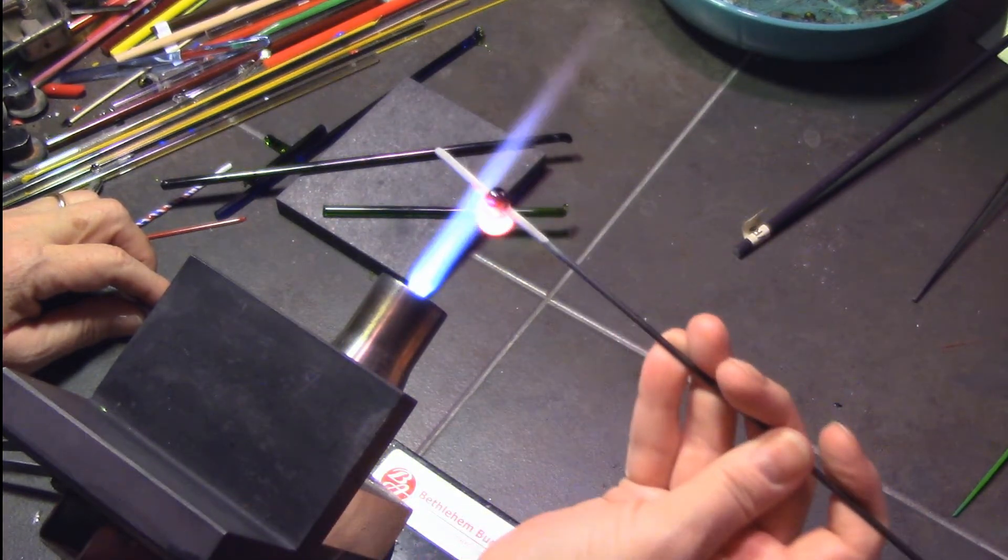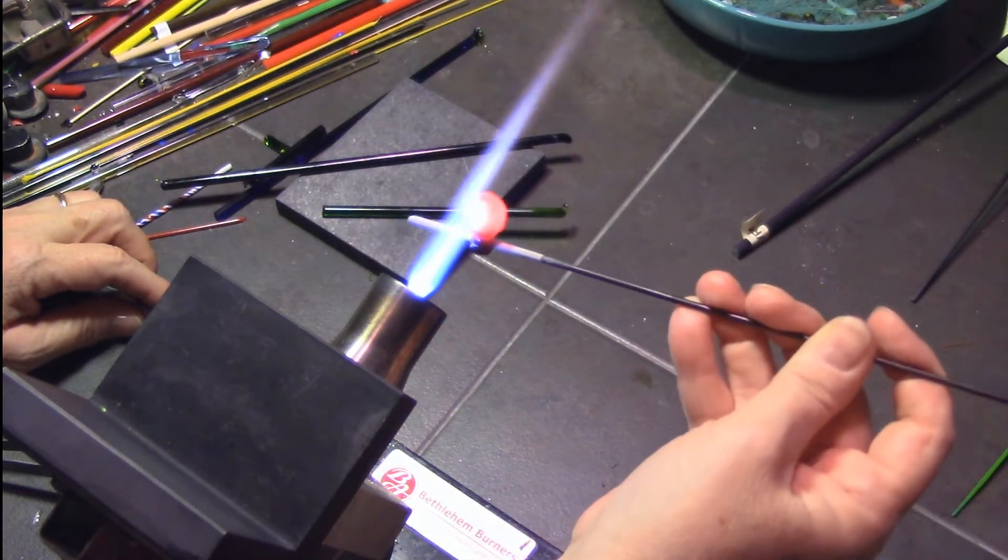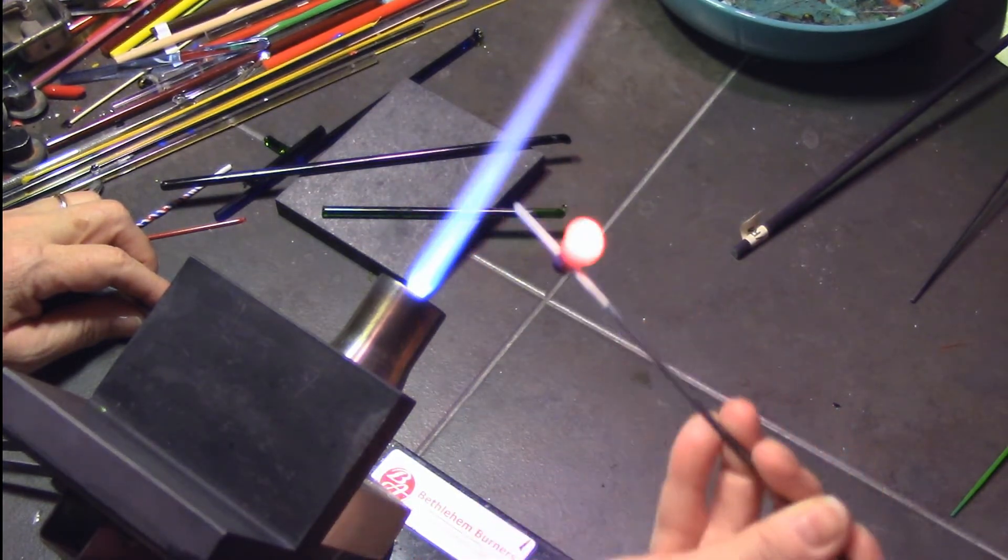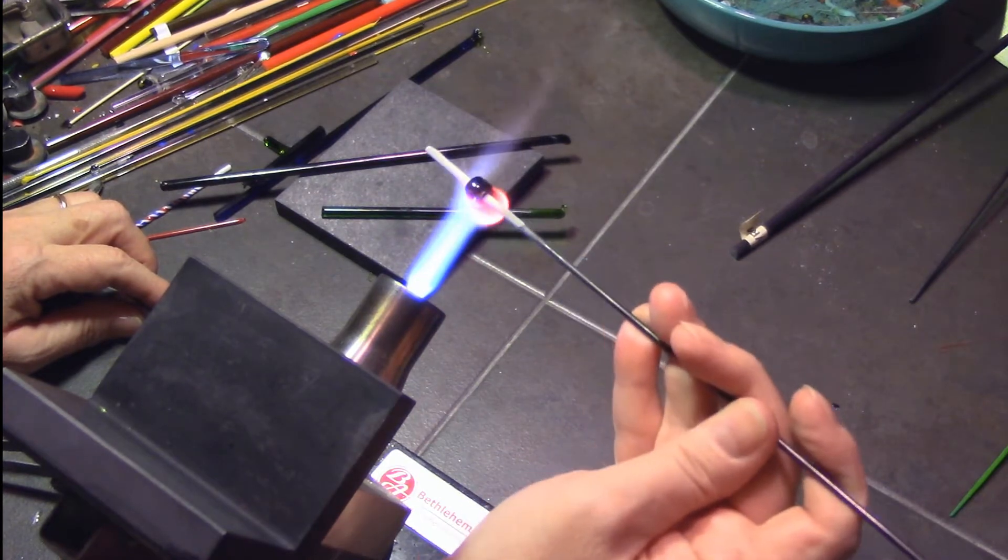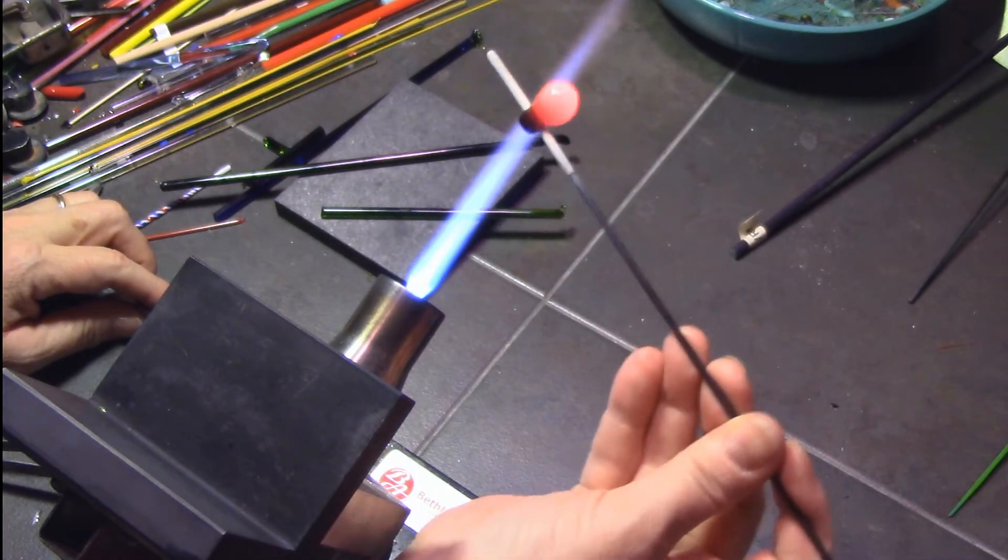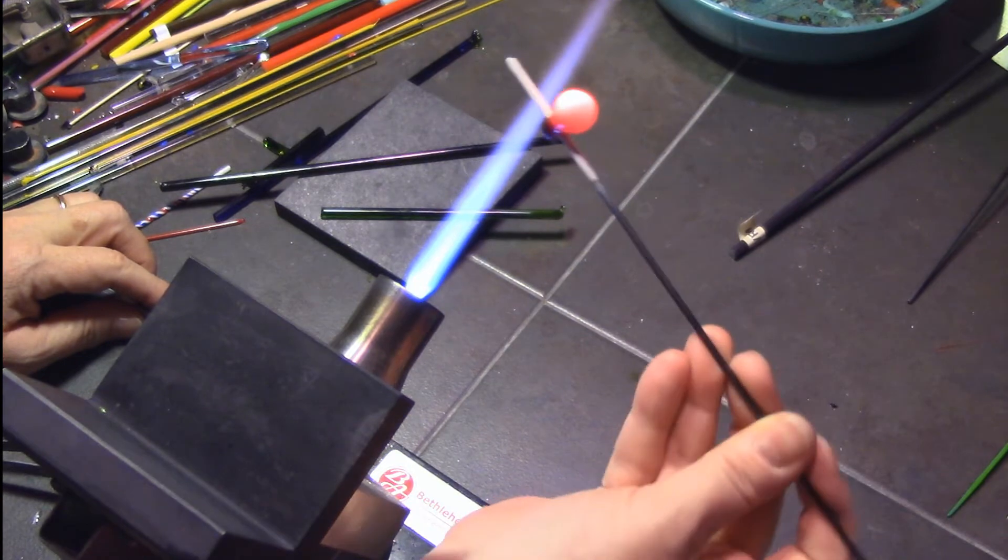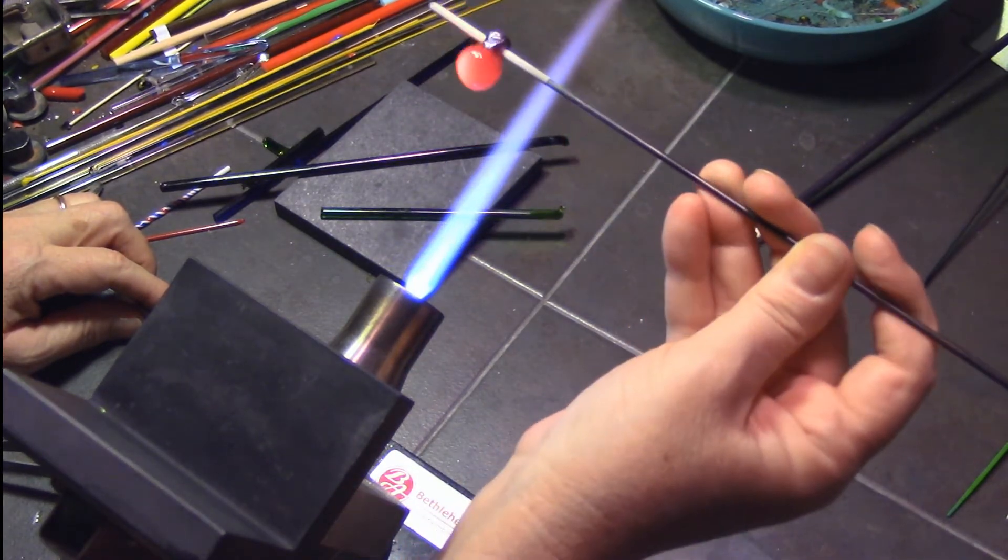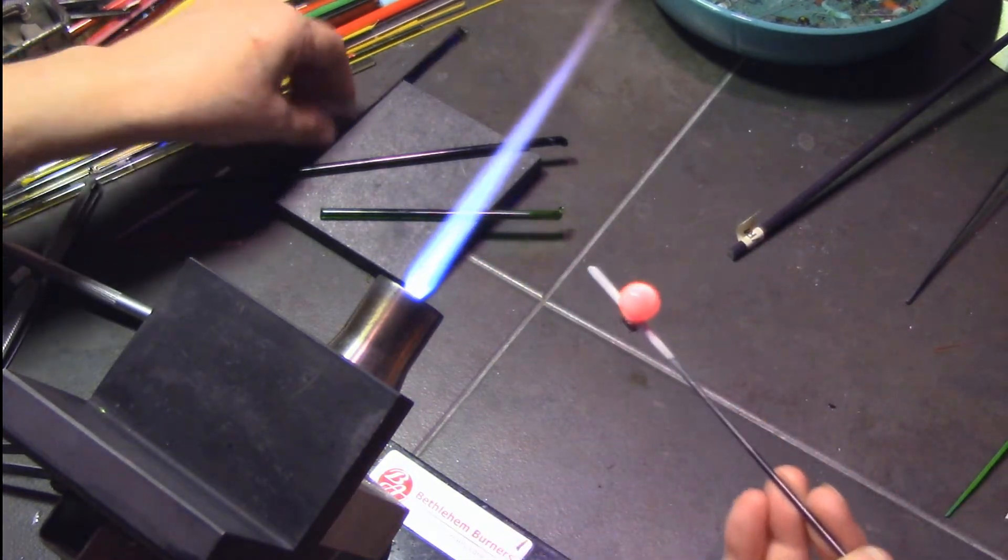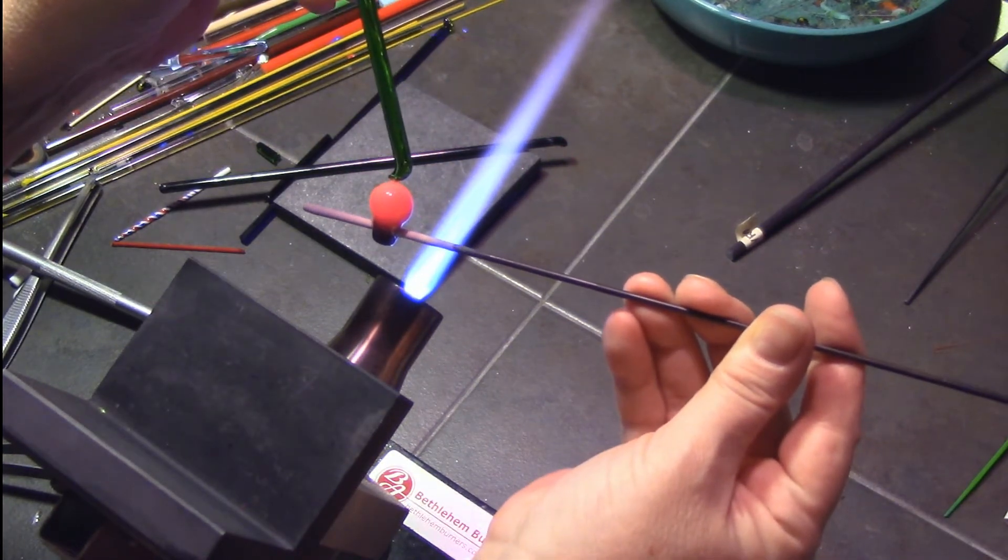I'm tilting it back and forth and trying to spot heat it, getting it to be a nice ball that's centered right on top of that bead that's on the mandrel. That's all I'm doing here—I'm tilting it back and forth, using gravity, using a little heat to make the glass move on certain sides, like on the left side, to round it out. I basically want just about a perfectly rounded ball.